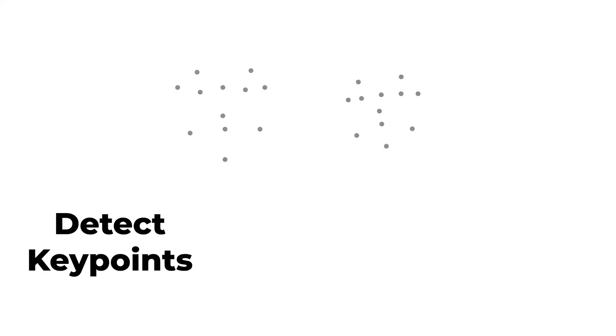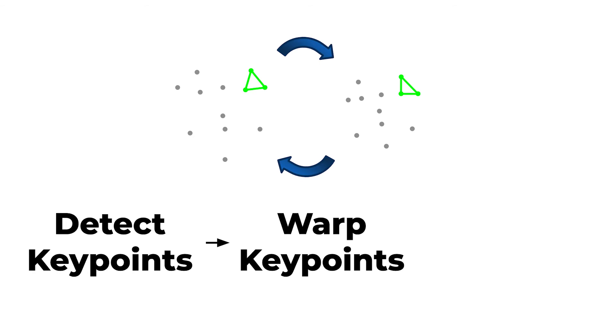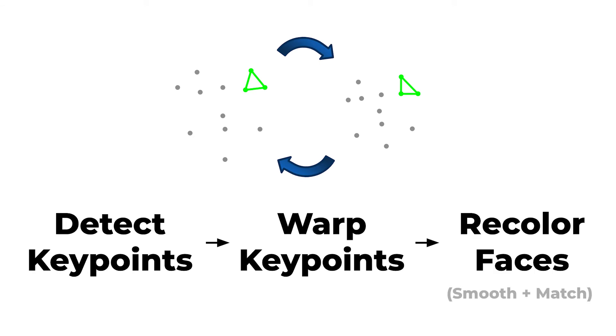This takes us from these faces to these. Notice that both faces are closer in saturation to the rest of their bodies than before. To recap: detect key points, warp key points, then recolor the new face by smoothing edges and matching color averages.